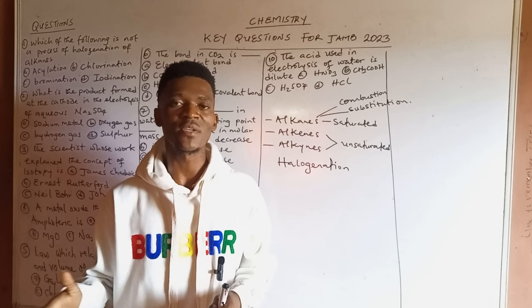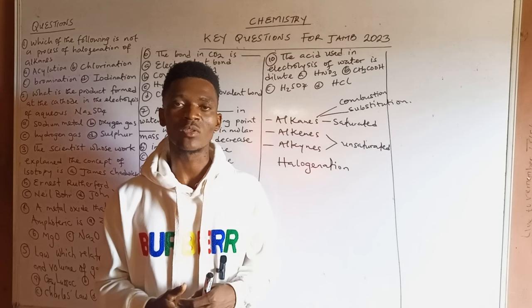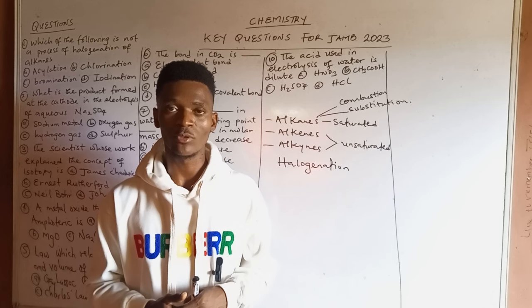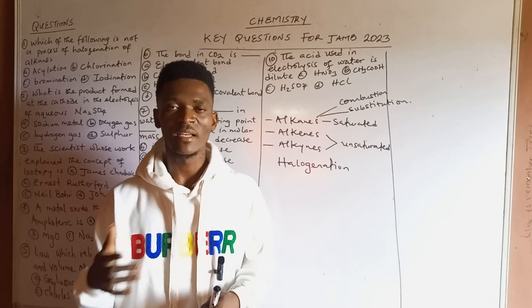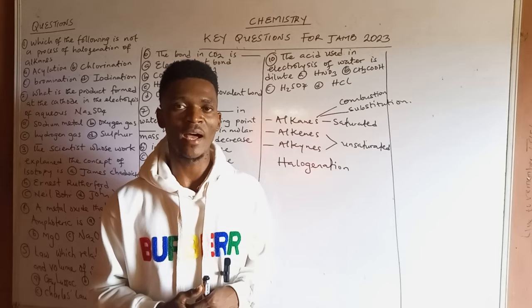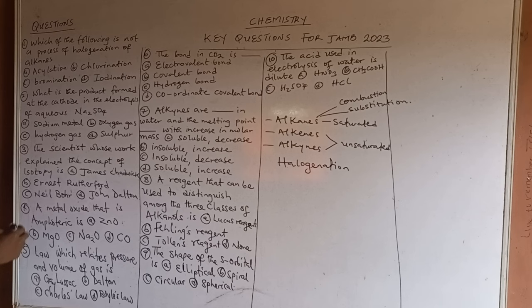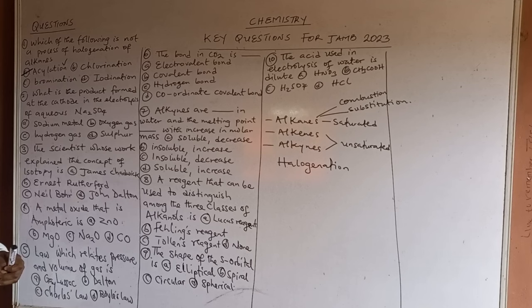For radioactive elements, it's not electrons but protons and neutrons that are actively involved in their reactions — they undergo nuclear reactions, not chemical ones. So alkanes can carry out halogenation with chlorine, bromine, and iodine. The best option that is not a halogenation process would be isolation. Halogenation means addition of halogen; chlorination is addition of chlorine; bromination, bromine; iodination, iodine.